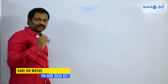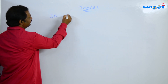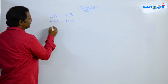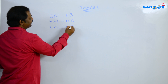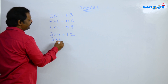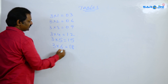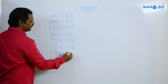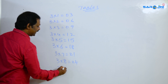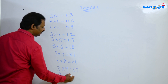If tables are stuck, now three tables are discussed. 3×1 is 3, 3×2 is 6, 3×3 is 9, 3×4 is 12, 3×5 is 15, 3×6 is 18, 3×7 is 21, 3×8 is 24, 3×9 is 27. That's why three tables are done.